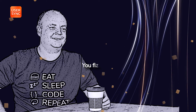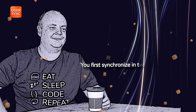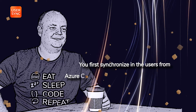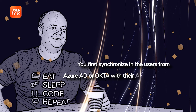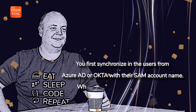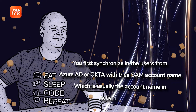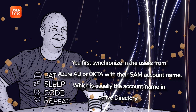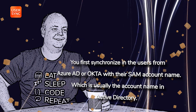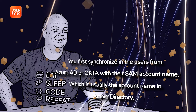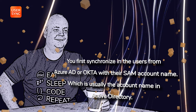Fundamentally, the principle is you first synchronize the users from Azure ID or Okta — it doesn't matter which IDP it is. You synchronize those users in with their SAM account name, which is usually the account name they have in Active Directory. That way those users are matched and are the same.